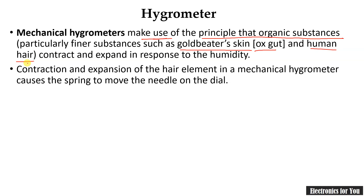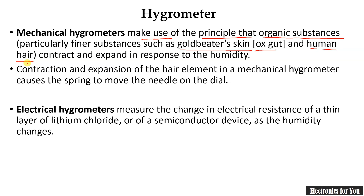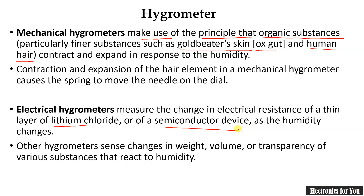The next type is the electrical hygrometer, which can use lithium chloride or mostly semiconductor devices that change their properties as per humidity. Other hygrometer sensors detect changes in weight, volume, or transparency of various substances that react to humidity, so there may be many types of electrical hygrometer.